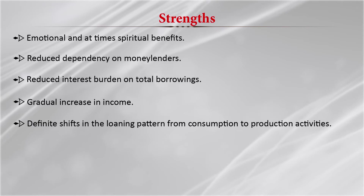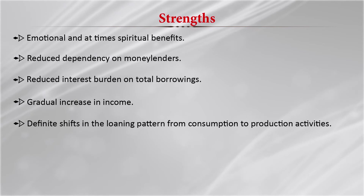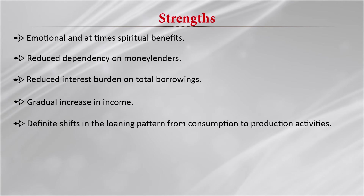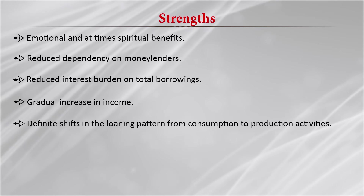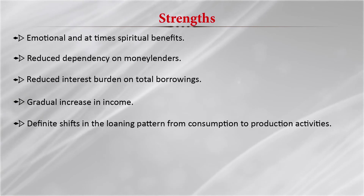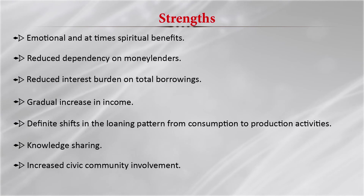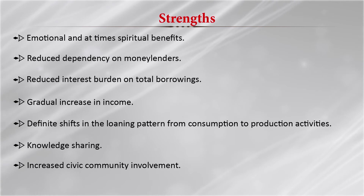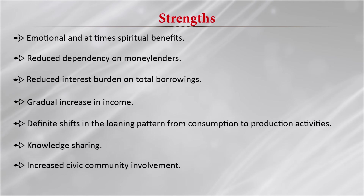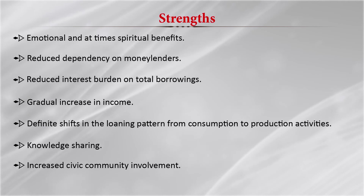There are definite shifts in loaning patterns from consumption to production activities. Out of the loans, members can buy seeds, engage in farming, start poultry or dairy businesses — any kind of small-scale business can be started through loans received from the self-help groups, making it a profit-generating mechanism. Knowledge sharing and increased civic community involvement also take place, fostering social mingling and a sense of belongingness through community engagement.